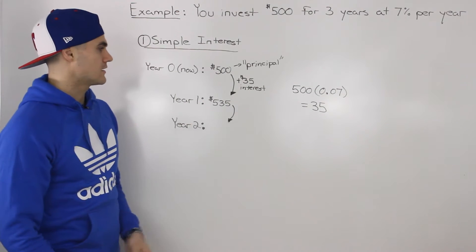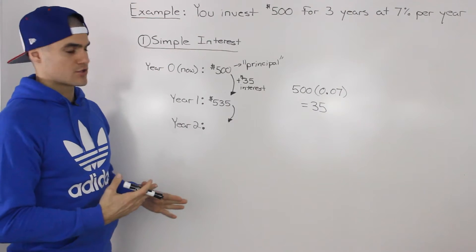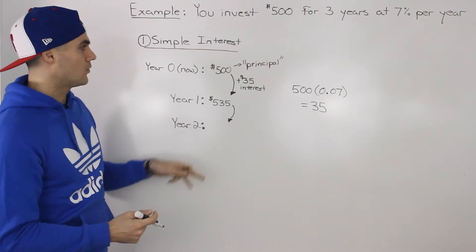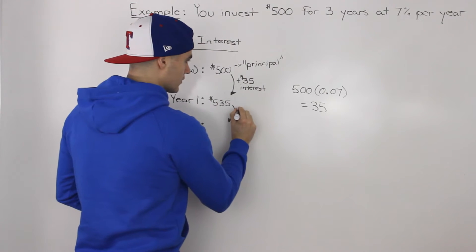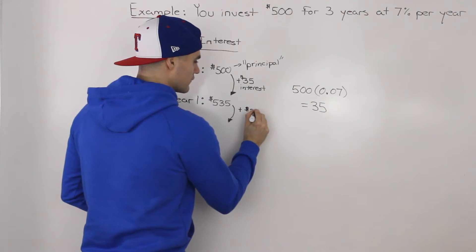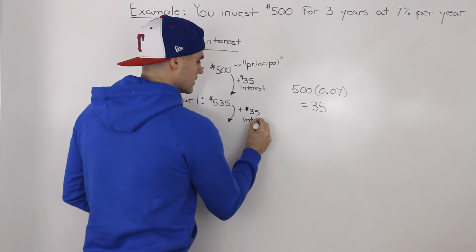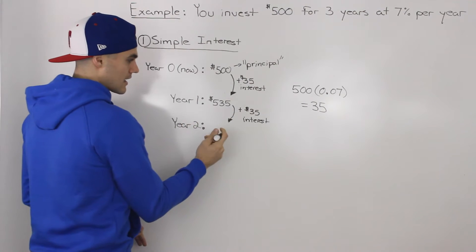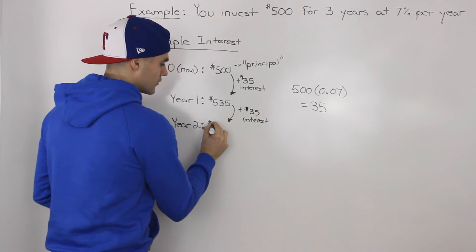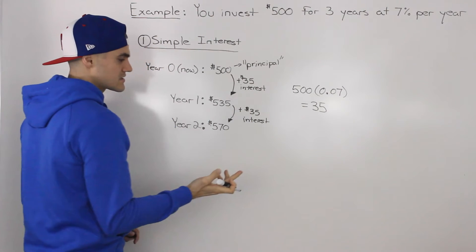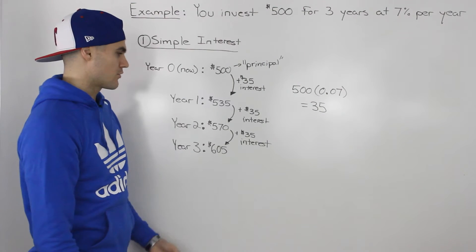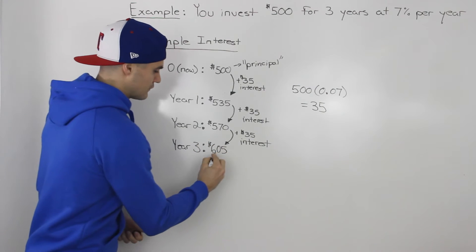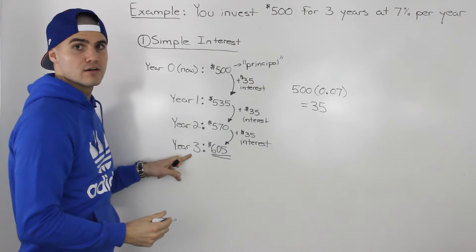Because we're dealing with simple interest, the interest amount is going to be the same throughout all the years — it's always based on that principal amount. In the second year, you also make that same $35 worth of interest, so $535 becomes $570. Similarly in the third year, you make another $35, so $570 plus $35 gives a final amount of $605 at the end of year three.